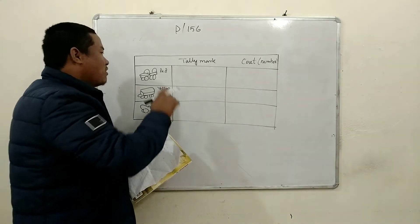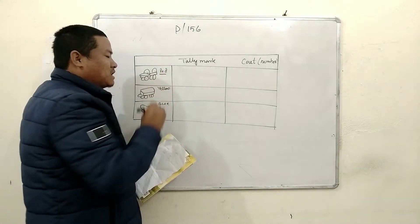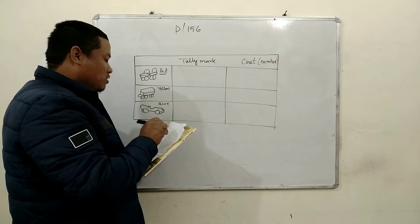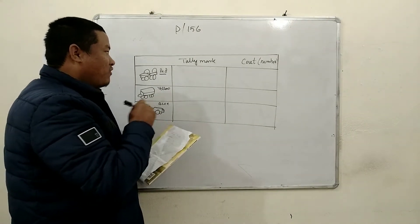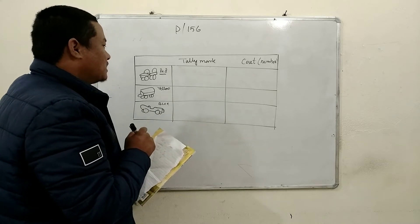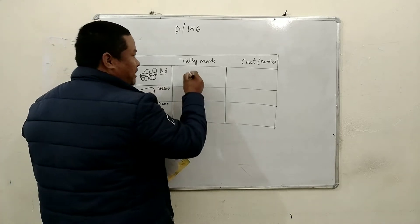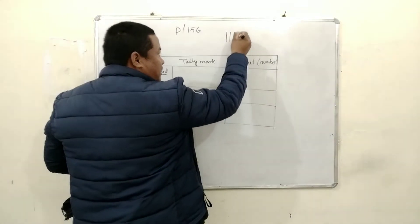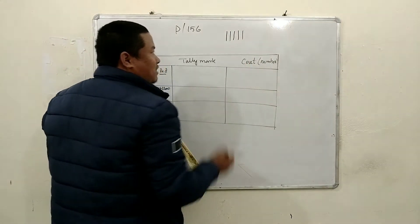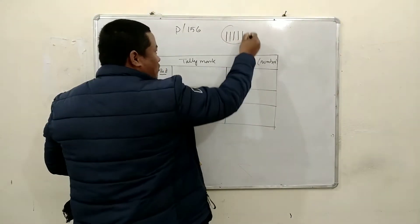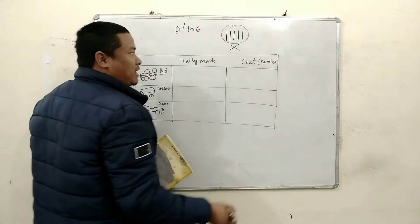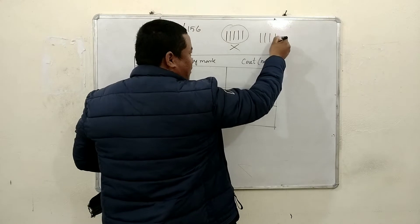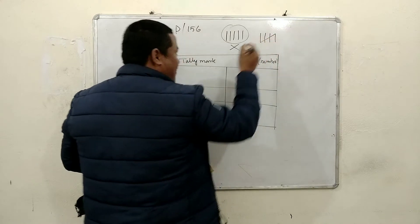See children, now count how many red cars there are. 1, 2, 3, 4, 5 — five red cars are there. So how to write in tally marks? If you write 1, 2, 3, 4, 5 in a straight line form, it will be wrong. So in tally marks, you have to write 1, 2, 3, 4, and the 5th one like a cross — like that.